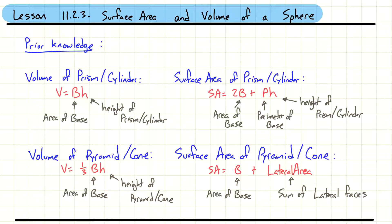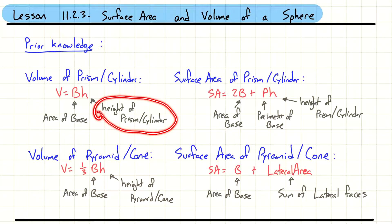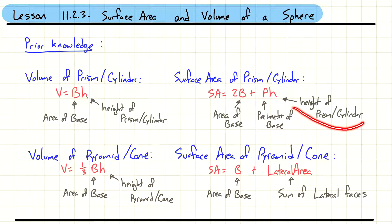We have volume of prism and cylinder — a simple formula to remember how to find the volume for both shapes. The only difference is the base shape. For a prism, the base is going to be some type of rectangle, square, trapezoid, hexagon, or really any two-dimensional shape. When that base shape becomes a circle, it becomes a cylinder. The height still comes from the 3D object. For surface area, the area of the base and perimeter of the base will help you get your surface area.